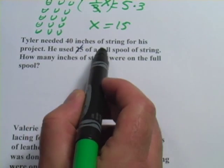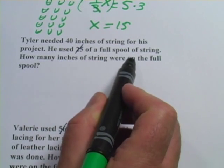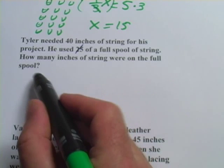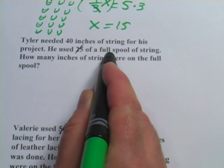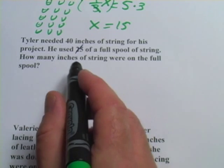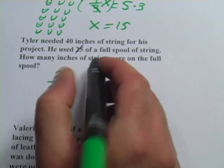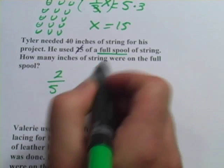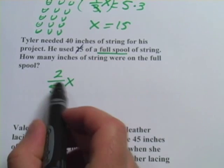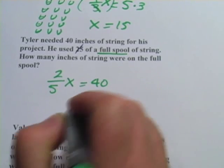Tyler needed forty inches of string for his project. He used two-fifths of a full spool of string. How many inches of string were on the full spool? So two-fifths of the full spool was forty inches long. We're going to write this out just like that previous problem. Two-fifths of the full spool. Well, that's the unknown because they're asking how many inches are on the full spool, so I'll make that X. Two-fifths times X, two-fifths of X, that was the forty inches that he used.